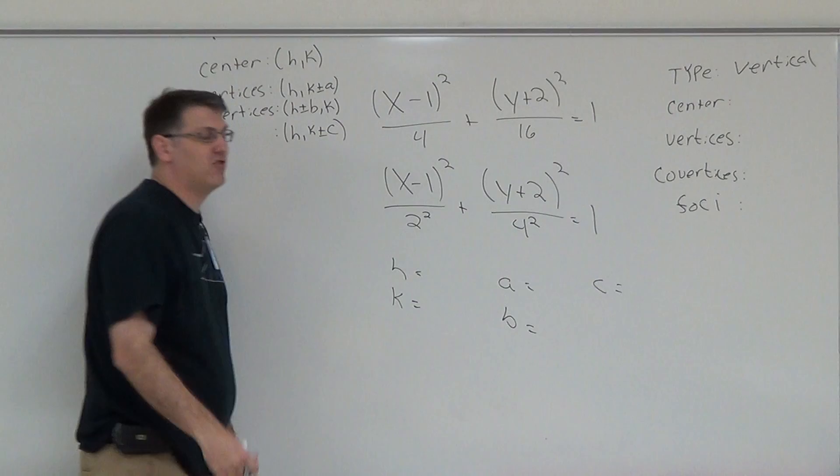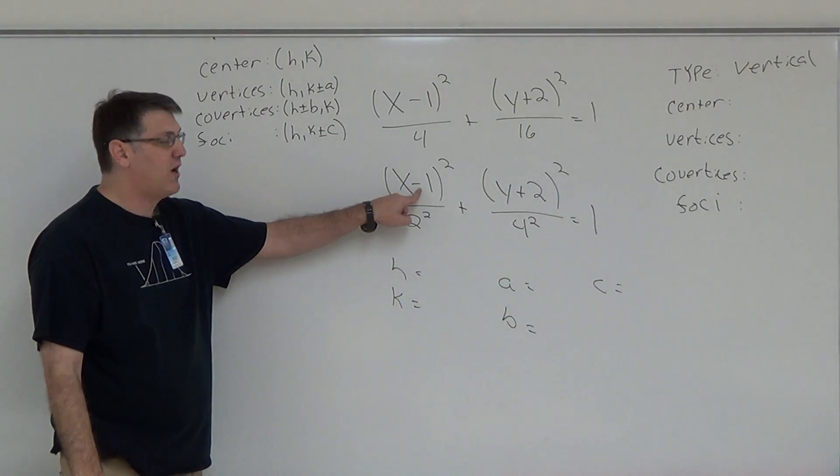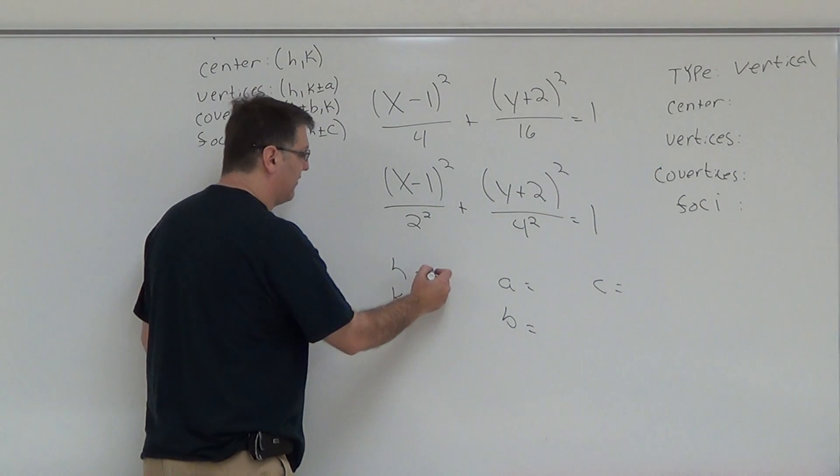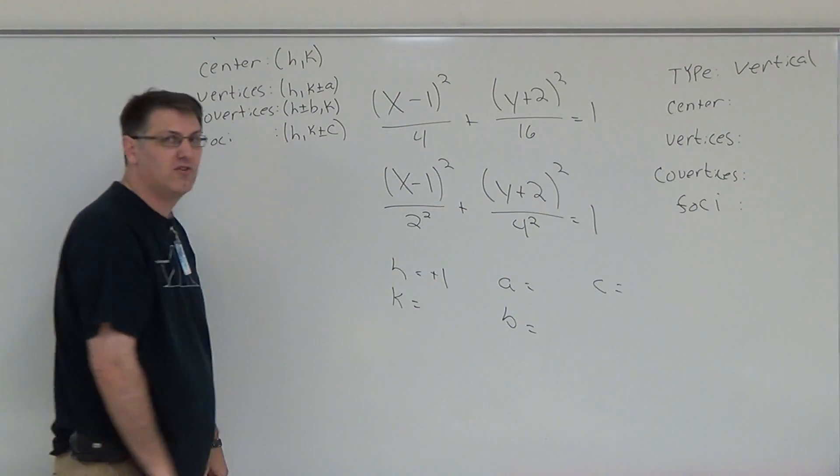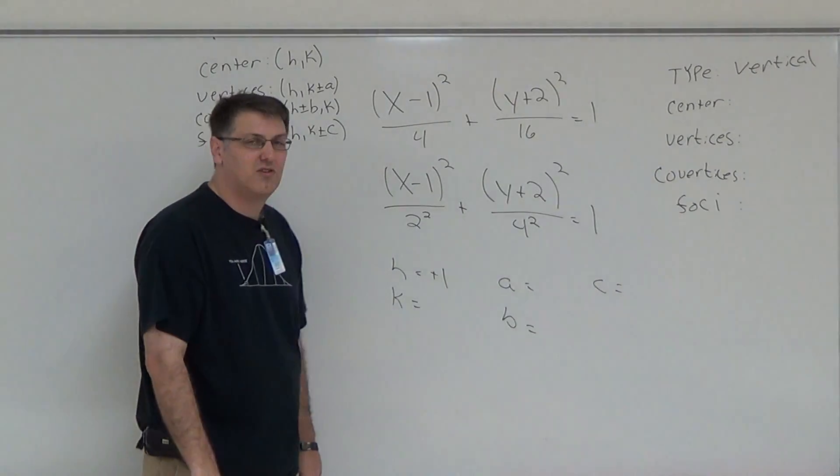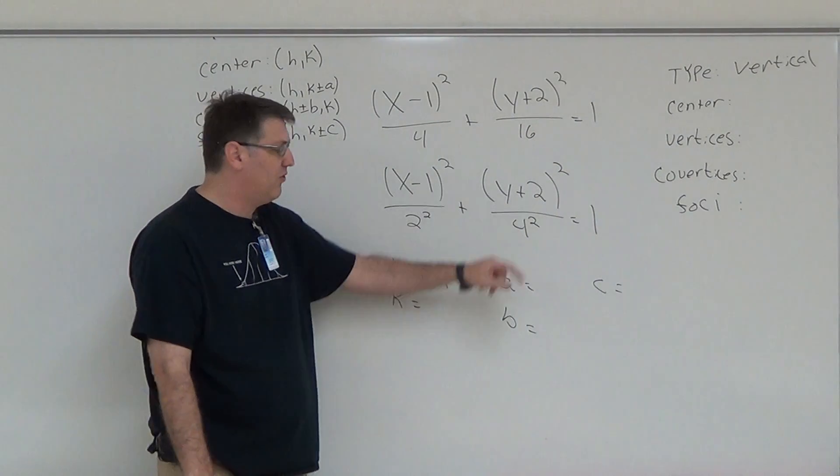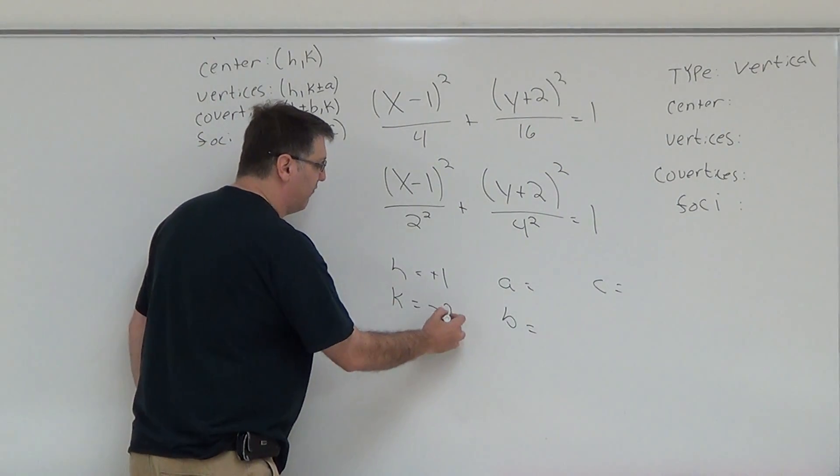My H, H is always what's being added or subtracted to the X, and you change the sign. We're subtracting a 1, therefore my H is positive 1. Your K is always attached to your Y and you change the sign. It's what's being added or subtracted. We're adding a positive 2, therefore my K is negative 2.